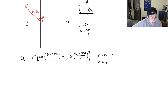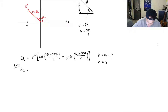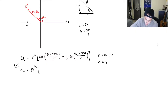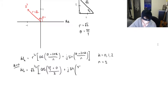We have all the information — θ, k, n, and r — so we apply the formula three times. Starting with k = 0: w₀ = (√2)^(1/3) · [cos((3π/4 + 2π·0)/3) + j·sin((3π/4 + 2π·0)/3)]. The 2πk term is just zero, so this simplifies to (√2)^(1/3) · [cos(3π/12) + j·sin(3π/12)], which is cos(π/4) + j·sin(π/4).